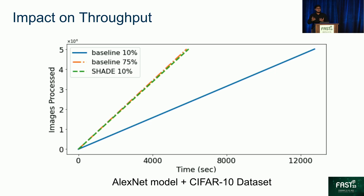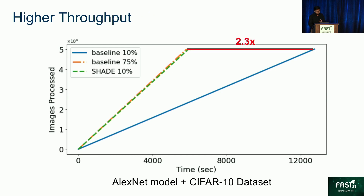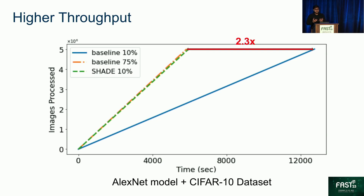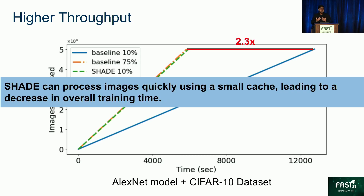Next, we look at the impact of Shade policies on the throughput of a DL training job. This figure shows the throughput we obtained when we trained the AlexNet model on the CIFAR-10 dataset. Shade, while caching just 10% of the dataset, manages to have 2.3 times higher throughput compared to the baseline at the same working set size. Interestingly, Shade caching just 10% achieves the same throughput as the baseline caching 75%, meaning the baseline is caching 7.5 times more data. This is because Shade can process images quickly by fetching repeated samples from the cache, leading to a decrease in overall training time.